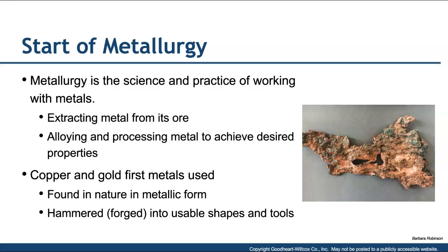Copper and gold were the first metals used. You've probably been in a museum and seen some of these ancient artifacts. Gold has always been traded and valued as a commodity, shaped into jewelry. Kings in olden days also expressed their significance by the amount of gold in their treasury. One of the reasons copper and gold were first used is because they were very malleable — able to be hammered or forged into useful shapes and tools.